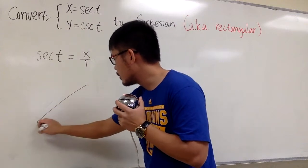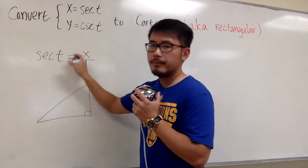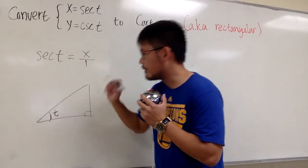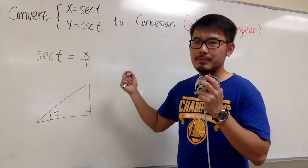Let me just draw a right triangle right here and put the right angle here. Secant t, the t is the angle, I will indicate that angle right here. That's t for the angle. And in the right triangle, secant means what?